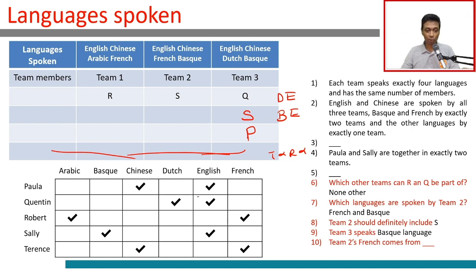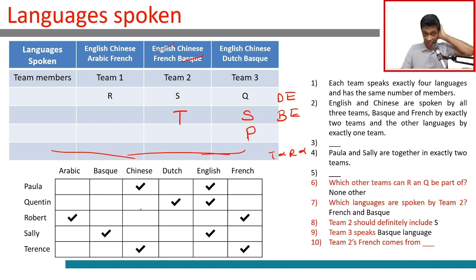Team 2 includes Sally, who brings Basque and English. We still need Chinese and French. French cannot come from Robert because he would bring Arabic too. So it must be Terence, who brings Chinese and French. So team 2 has Terence and Sally. Sally and Terence together account for all 4 languages. We need a third person on the team, but that person should not bring a new language — they should speak 2 languages already present, from English, Chinese, French, or Basque.